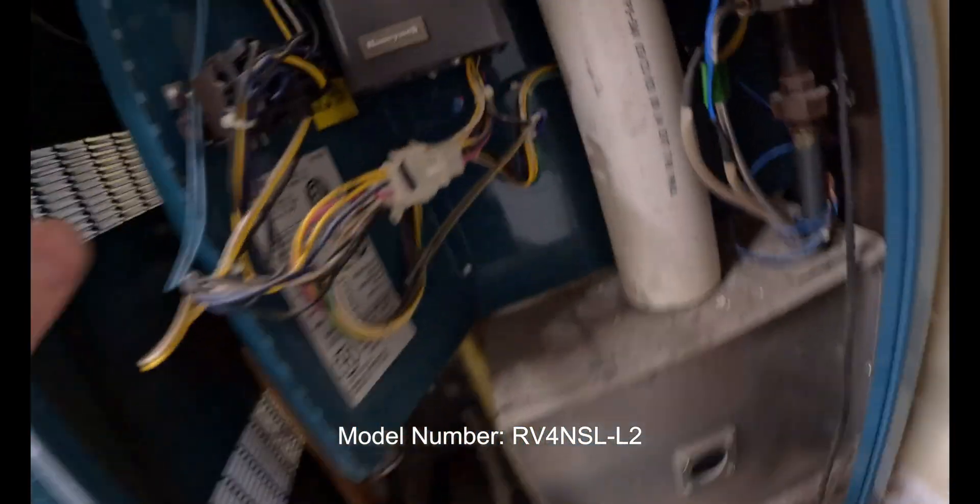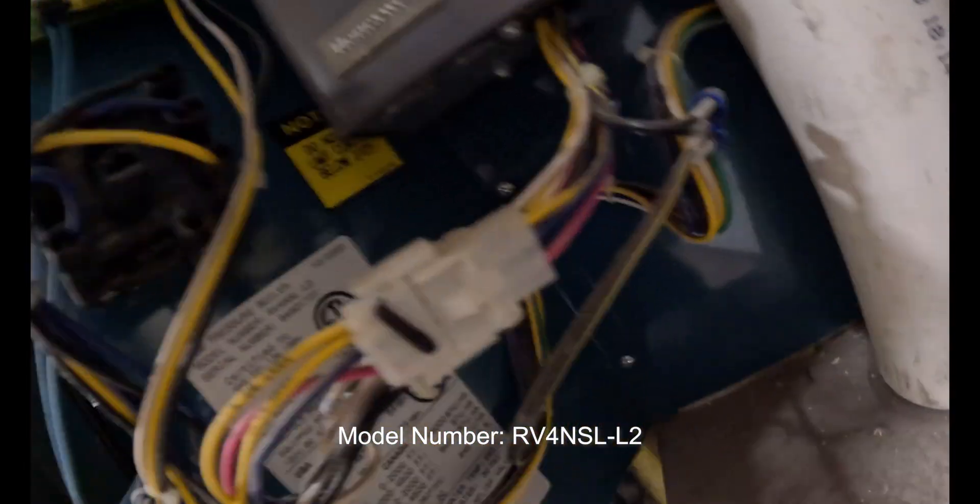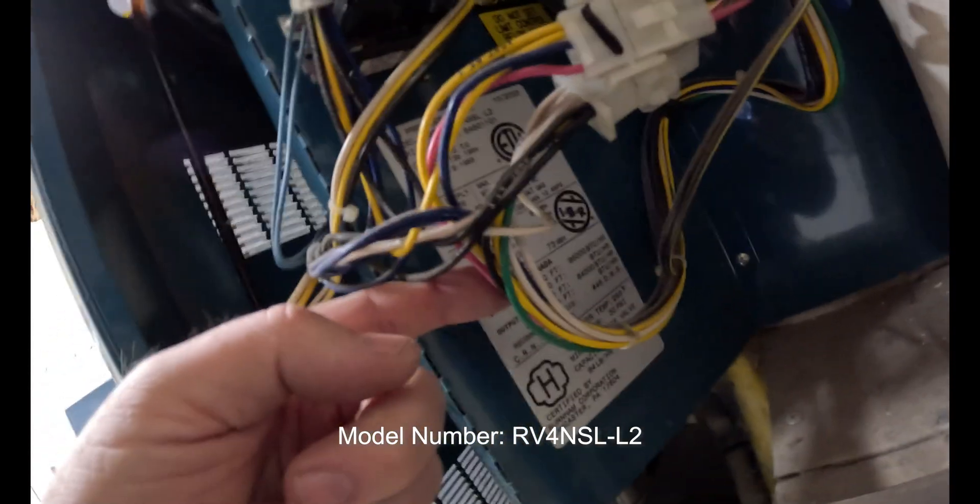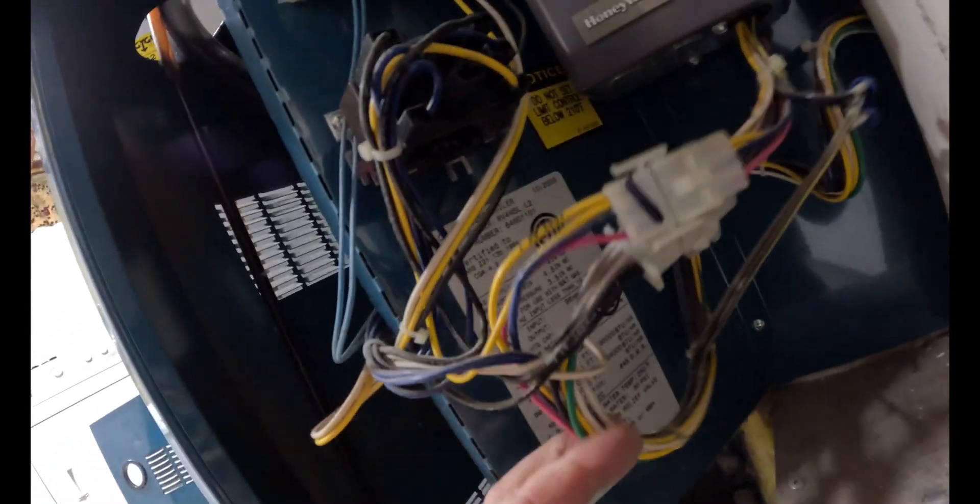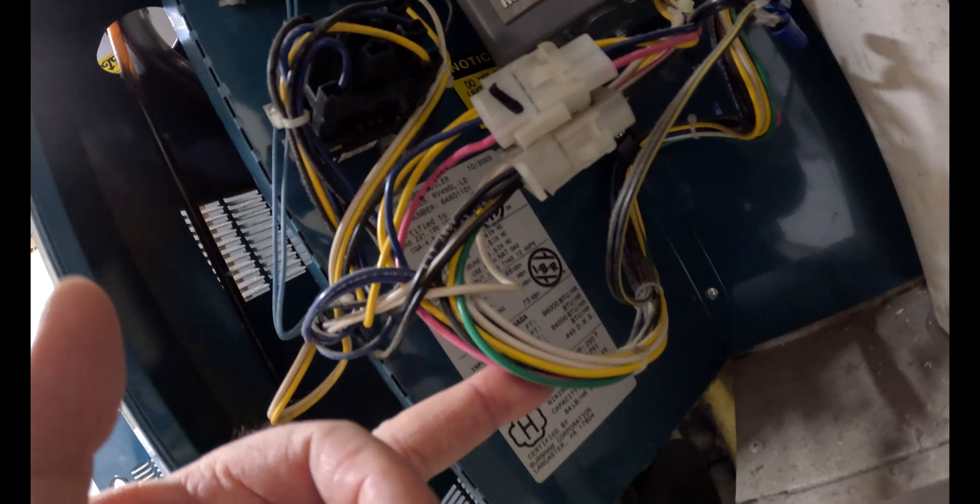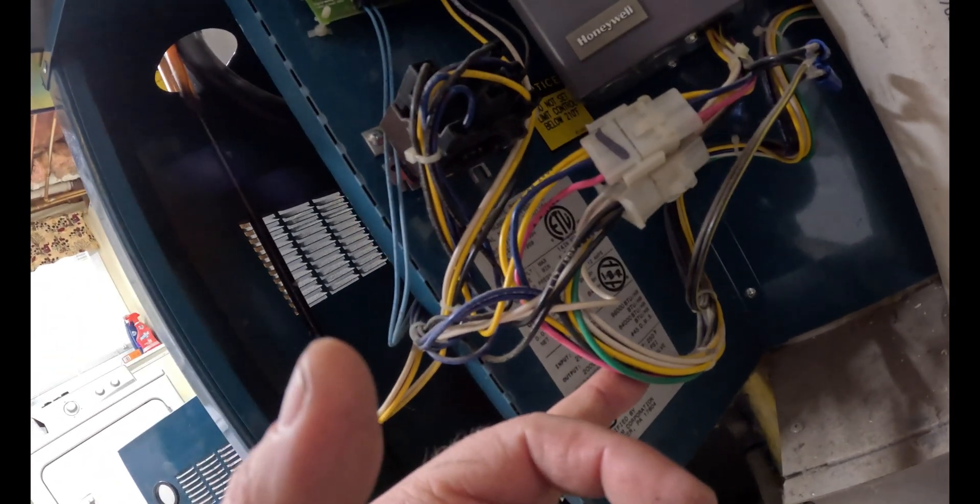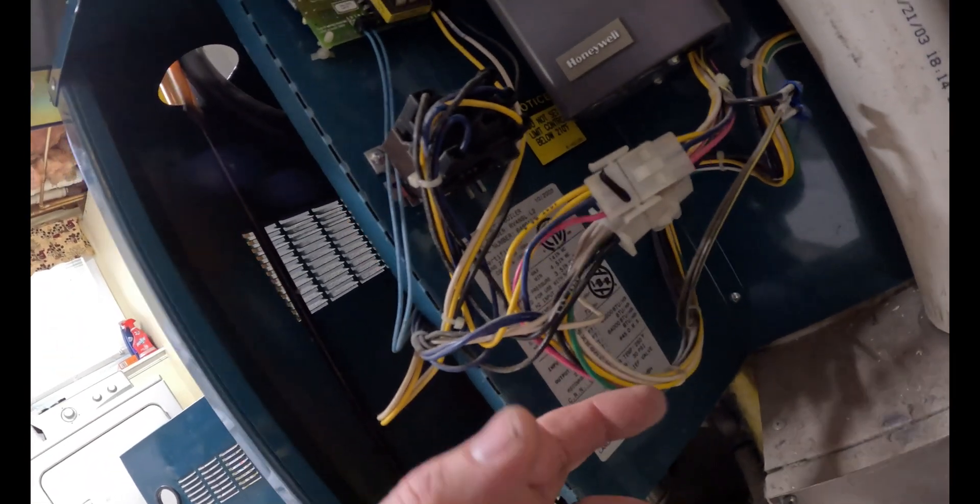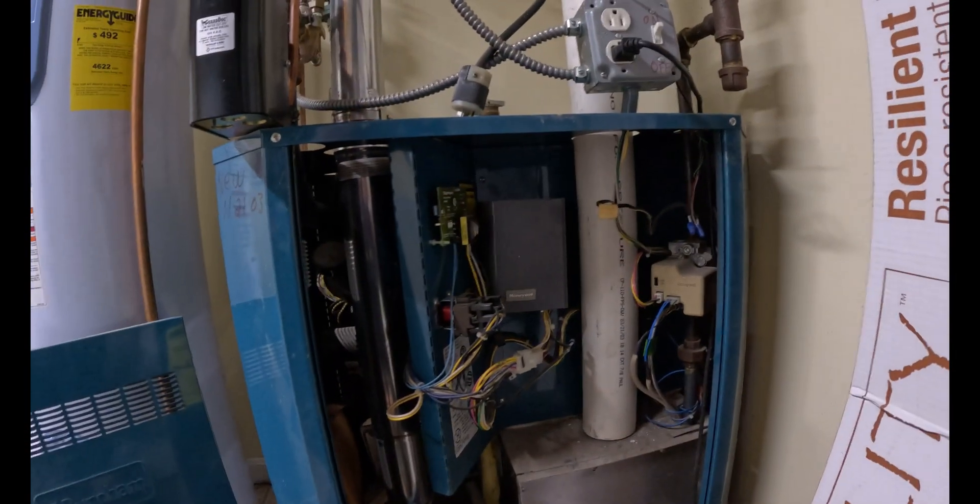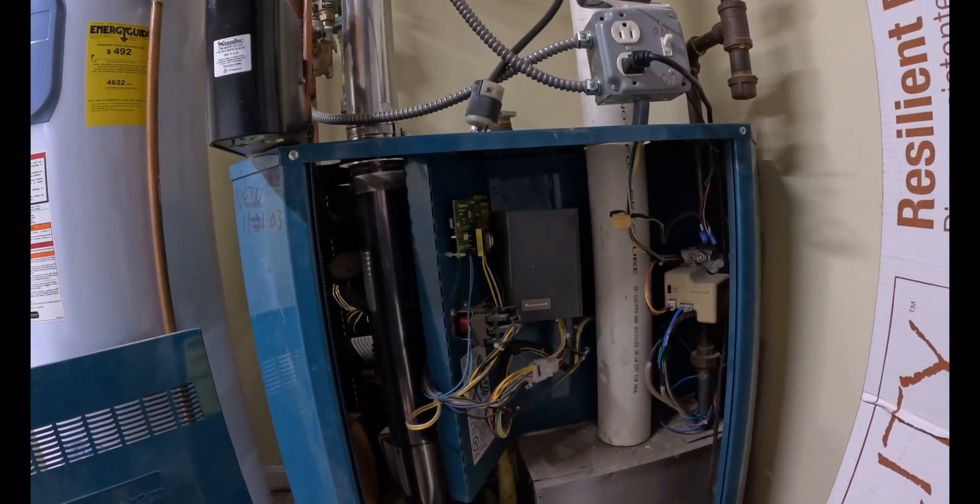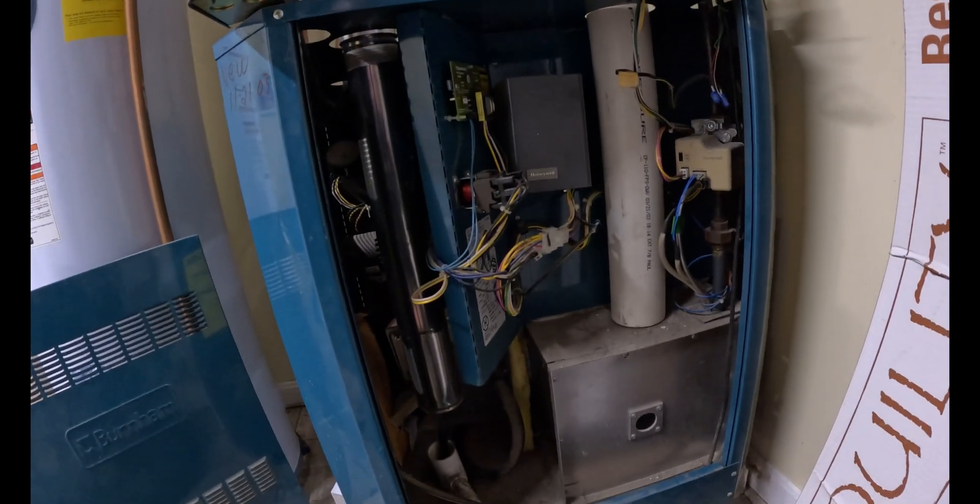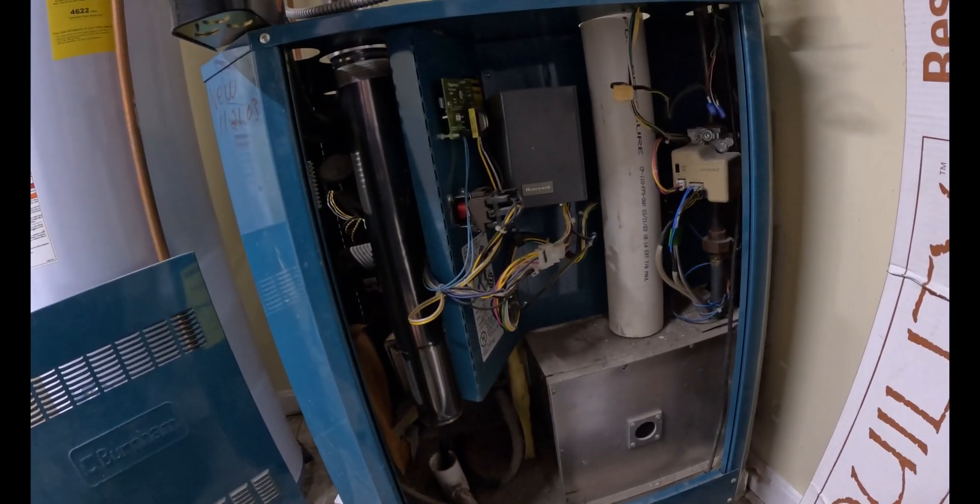Again, this is a Burnham Revolution boiler. This boiler here, input is 96,000 BTU, which is kind of big for this house. You're going to get 84,000 out. So nice boiler for, you know, pretty standard home, 2,000 square foot home kind of thing, plenty big for that. You could put an indirect on this thing if you want to.